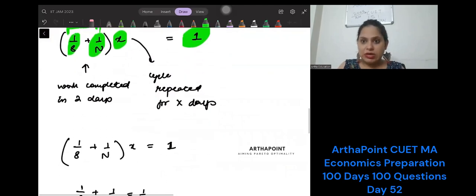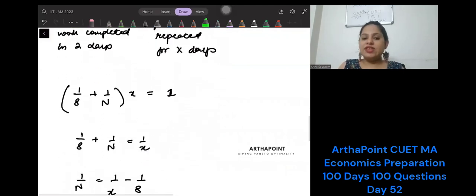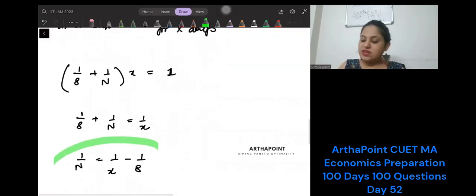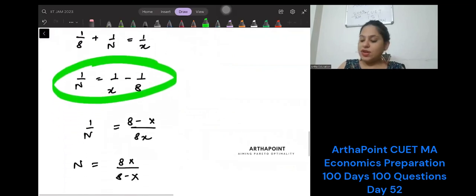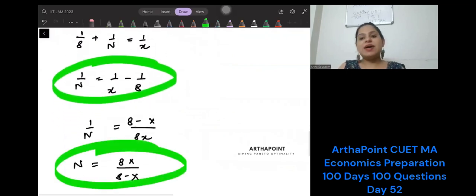So from here we will go ahead and we can solve for X, for N. So if you solve for N, you will get the value of N as 8X/(8 - X). But I want to maximize this value.